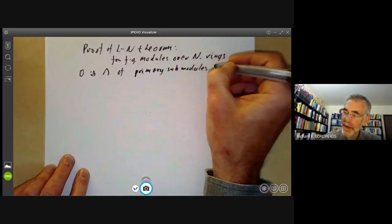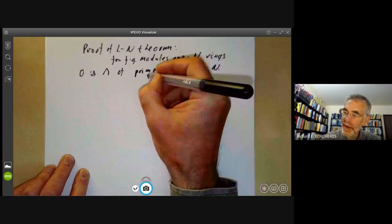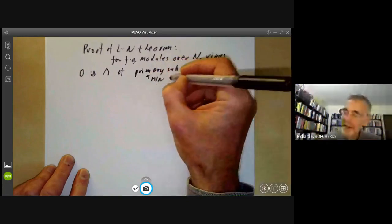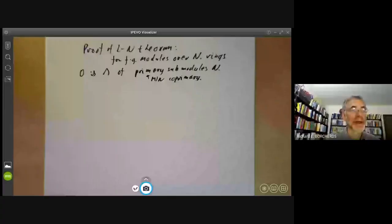Recall that n is primary means that m over n is co-primary. This is so short we can get it onto one slide if we cheat slightly. It has two steps.